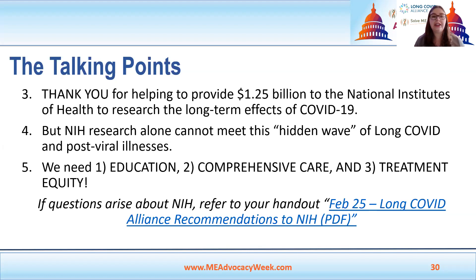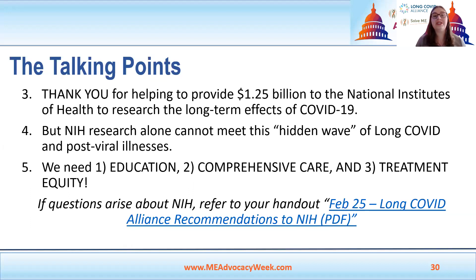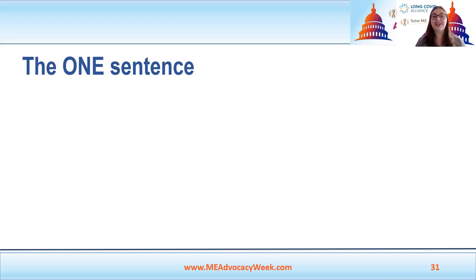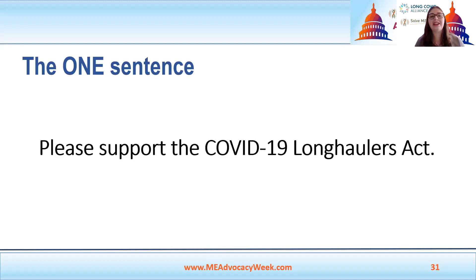We all know NIH is very slow — NIH is going to take years, maybe decades before all that funding is distributed, then more years before studies are conducted, more years before they're reviewed and published, more years before the FDA reviews and approves. So we're talking at least five to seven years before anything tangible can really come out of the NIH initiative. But that doesn't mean there's nothing Congress can do now to mitigate this crisis — improve education, comprehensive care, and treatment equity. Those are the three things addressed in the new rewritten COVID-19 Long Haulers Act. If you get questions specifically about NIH, refer them to the third item in your handout: the February 25th Long COVID Alliance Recommendations to NIH — a five-page letter outlining all the research priorities, including those for ME-CFS, and suggested studies to help launch post-viral illness research. If you're out of your comfort zone, just write down the question in your notes and flag it for our team. If you ever get stuck, just go back to the one sentence: please support — or in the House, please co-sponsor — the COVID-19 Long Haulers Act.